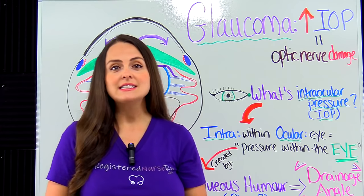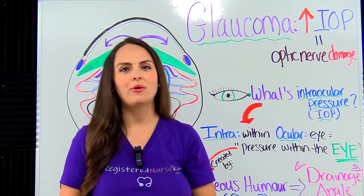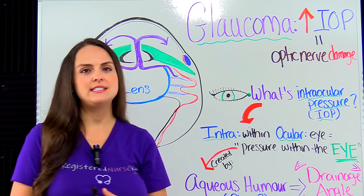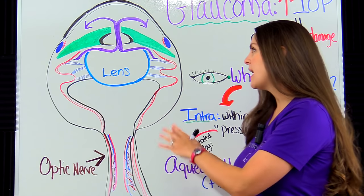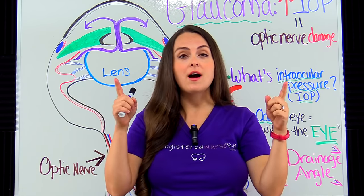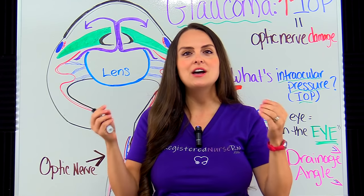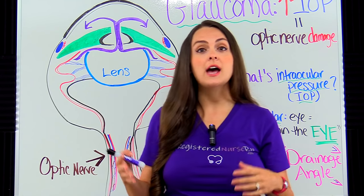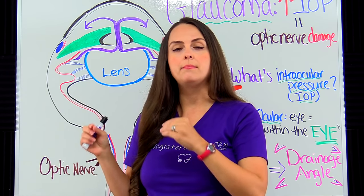Glaucoma is a set of eye diseases that is caused by increased intraocular pressure. And whenever this happens, it results in optic nerve damage. Our optic nerve helps transmit information that we see with our eyes to our brains, so it plays a huge role in giving us our vision. If this nerve becomes damaged, the person is going to have vision loss that can eventually lead to permanent blindness.